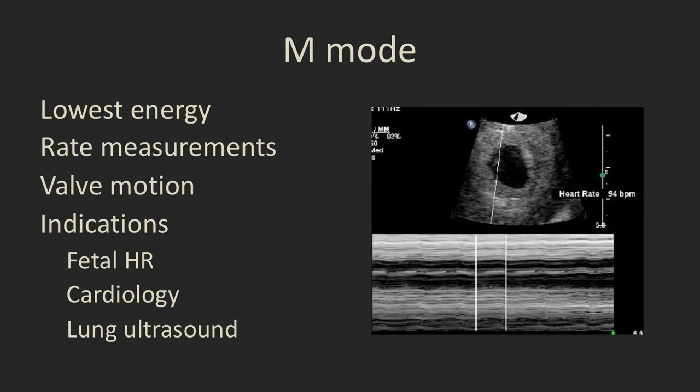M mode is the most basic type of Doppler ultrasound. It uses the lowest energy, so it's a very safe form of ultrasound that we can use on tiny embryos. We use it for a limited number of applications, primarily for measuring the rate of something.